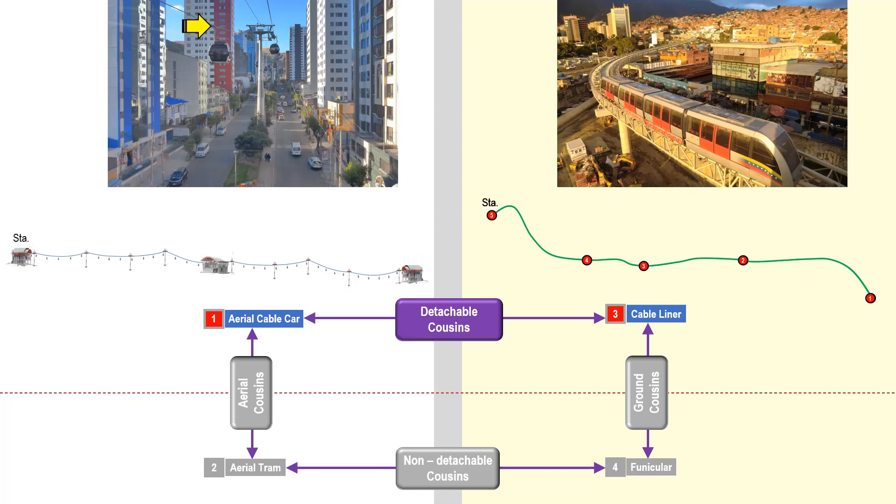In the next chapter, it will be how detachable cable liner works. A detachable ART means that a cabin can be detached from the cable that propels them. Being detachable generally leads to higher passenger capacity per hour per direction.